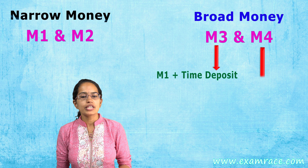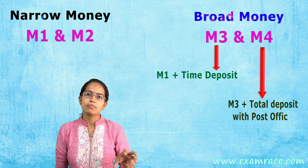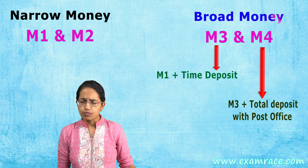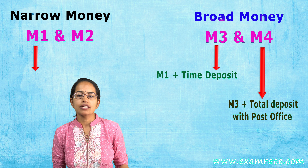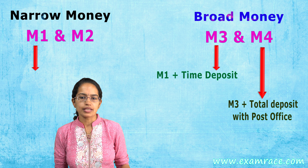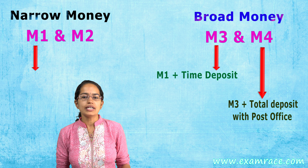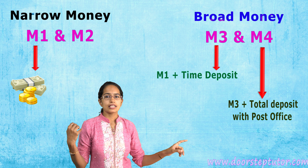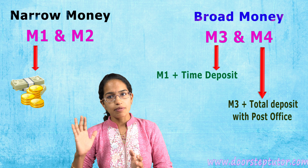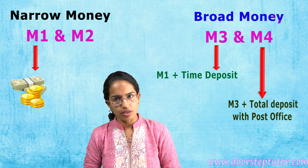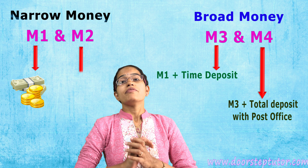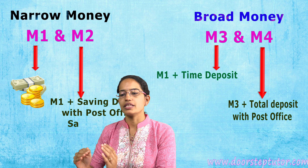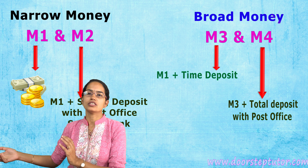M4 is the least liquid form of money because most of it is kept as deposits and bonds, while M1 is the most liquid form. M1 consists of currency notes and coins that are in circulation, along with demand deposits held with banks.